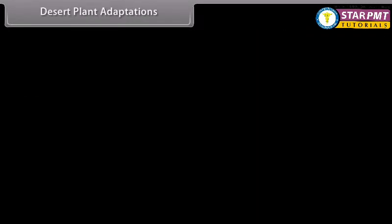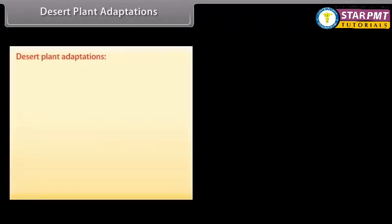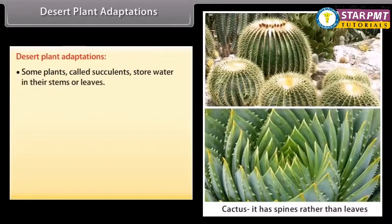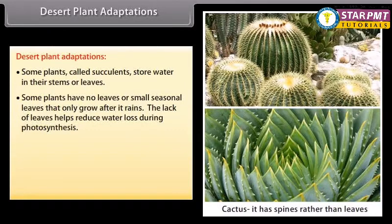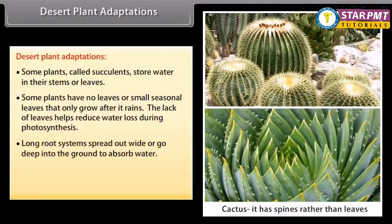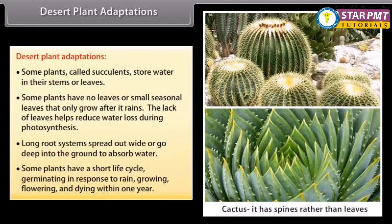Desert plant adaptations: some plants called succulents store water in their stems or leaves. Some plants have no leaves or small seasonal leaves that only grow after it rains, which helps reduce water loss during photosynthesis. Long root systems spread out wide or go deep into the ground to absorb water. Some plants have a short life cycle, germinating in response to rain, then growing, flowering, and dying within one year.